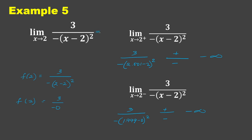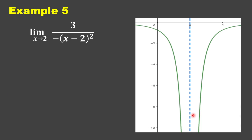Therefore, the answer is negative infinity, since the right-hand limit equals the left-hand limit. Let us use the graph to check. We have the vertical asymptote at x equals 2. From the left of 2, f of x decreases without bound, and the same from the right of 2. So therefore, this is negative infinity.